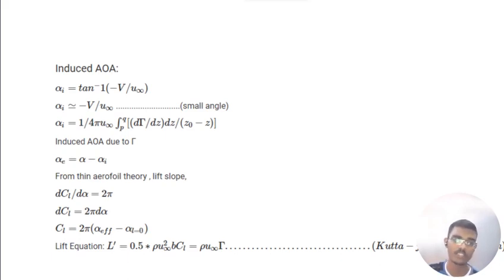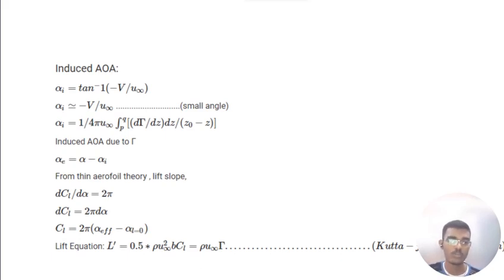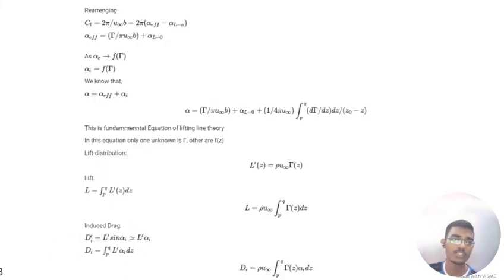From thin aerofoil theory, the lift slope dcl/d-alpha equals 2 pi. The coefficient of lift equals 2 pi times (alpha-effective minus alpha at zero lift), where alpha at zero-lift is the angle of attack when lift equals zero. The lift per unit span l-prime equals one-half times rho V-squared times b times Cl. From the Kutta condition, l-prime equals rho times free stream velocity times gamma, giving Cl equal to 2 pi divided by (free stream velocity times span b).